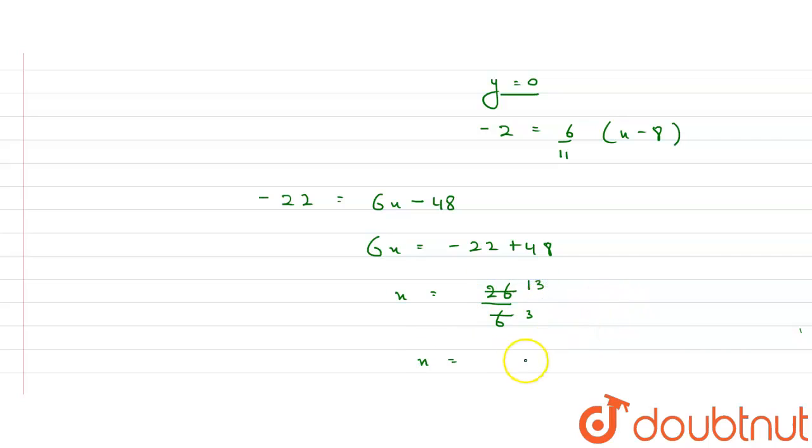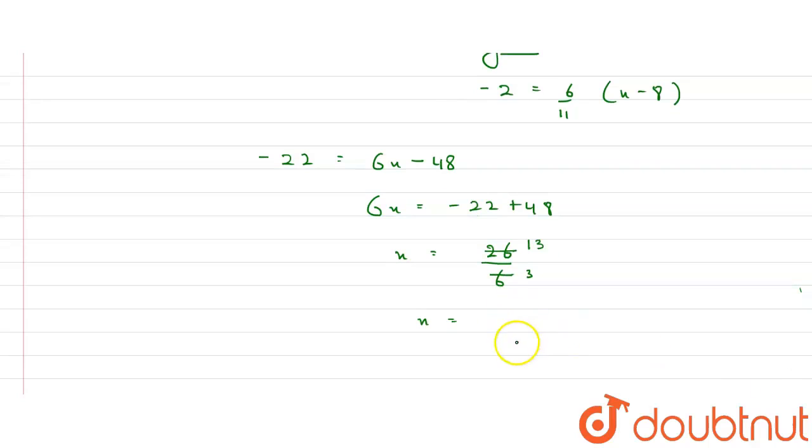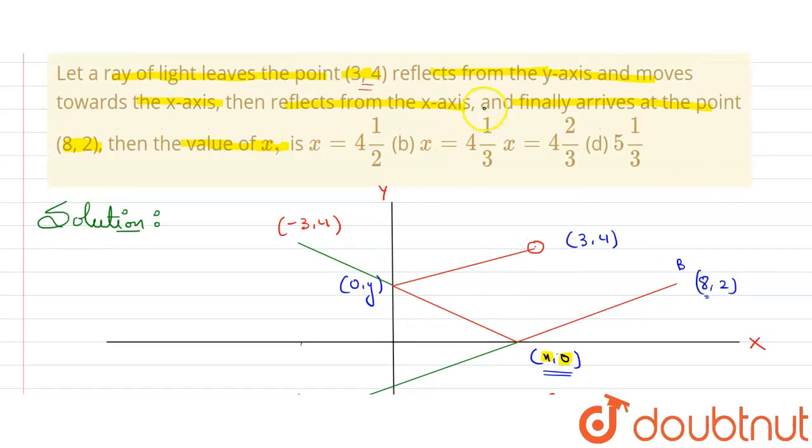So in mixed fraction what I'll get here: 13/3, multiply 4 and 1, 4 1/3. So let's match here 4 1/3, this option B is 4 1/3. So this will be the correct answer. Thank you.